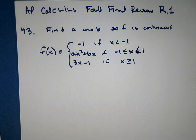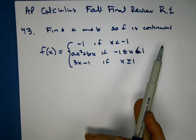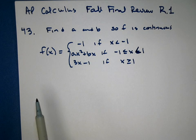Okay, the next question that was asked was number 43 from R1, and 43 asked us to find A and B so that F was continuous if we plug in those numbers.